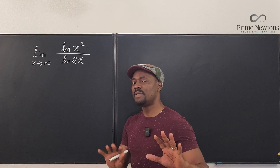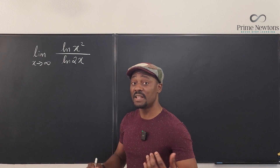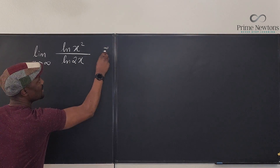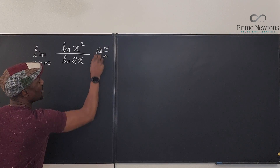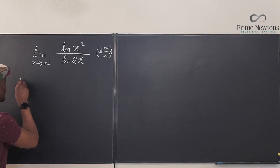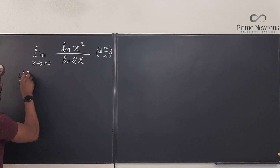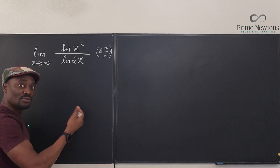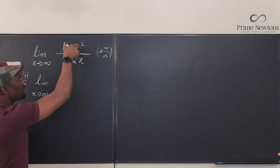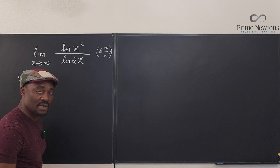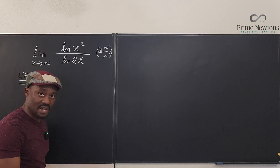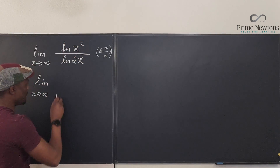Since we have the indeterminate form infinity over infinity, that's a license to use L'Hôpital's rule. By L'Hôpital's rule, I have to take the derivative of the top and the derivative of the bottom. So I'll have the limit as x approaches infinity. The derivative of natural log of x squared — remember, the derivative of any natural log function is the derivative of the argument divided by the argument. The derivative of x squared is 2x.